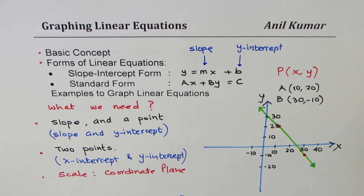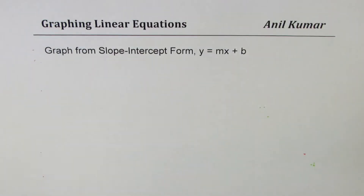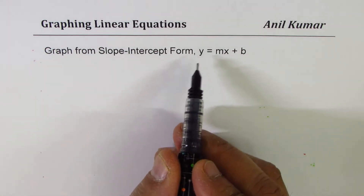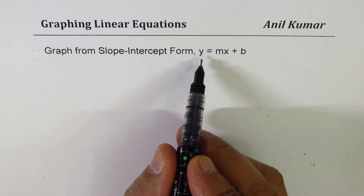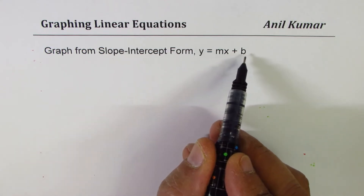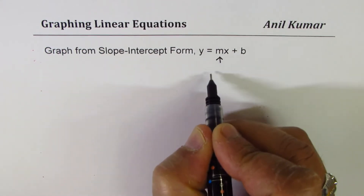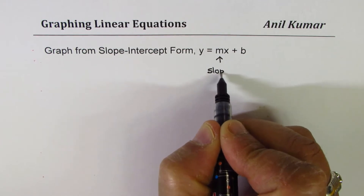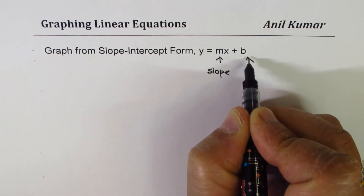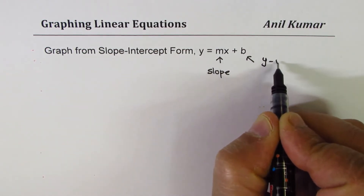Now let's take some simple examples based on our linear equations and sketch their graphs. We'll first take slope-intercept form. Given y equals mx plus b, m gives us the slope and b provides the y-intercept.